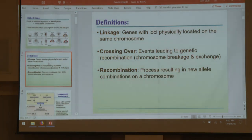Some definitions: we just talked about linkage. We already spoke about crossing over as a form of recombination — the process that puts new allele combinations into offspring. The example we know of is crossing over. Crossing over shows independent assortment versus linked behavior.